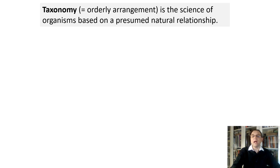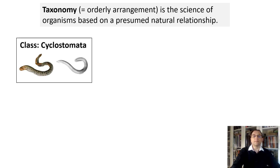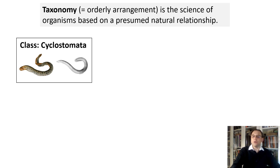Taxonomy is the science of organism classification based on presumed natural relationships. Thus, the organisms of our time have had common ancestors in the past. For example, animals are grouped into classes. Class Cyclostomata comprises the living jawless fish. Cyclo means round, stomata means mouth. The lampreys and hagfishes both belong to class Cyclostomata; both groups have jawless mouths with horny epidermal structures that function as teeth.